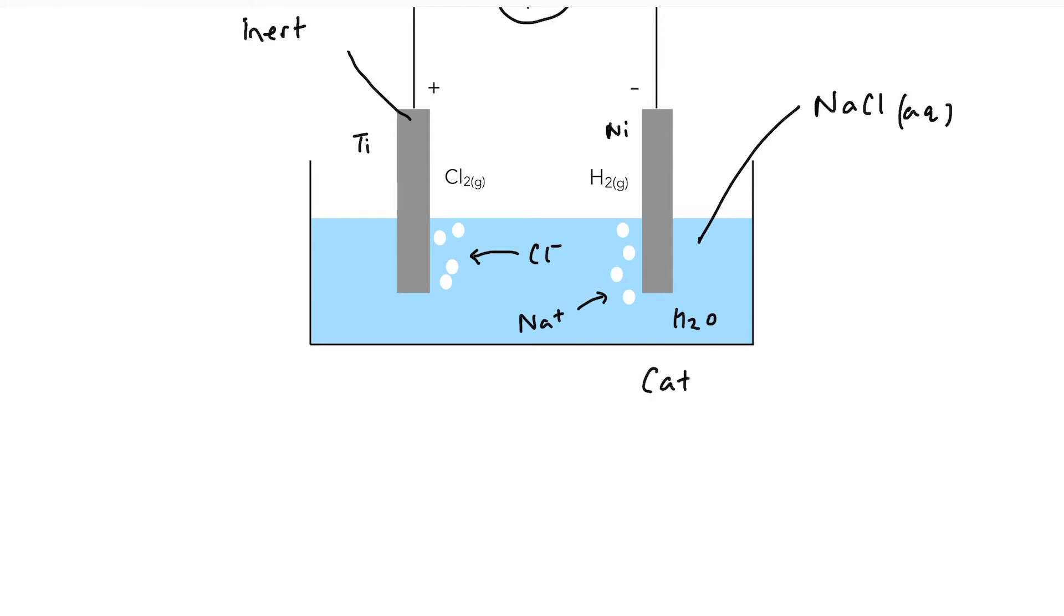The cathode is where reduction reactions happen. And once again, we've got two possibilities. Either I could be reducing my sodium ions or I can be reducing water. So if I were to reduce my sodium ions, they gain electrons to form sodium metal. And the standard electrode potential for this reaction is minus 2.71 volts.